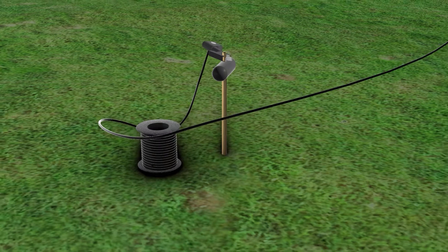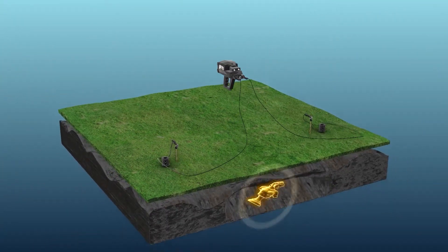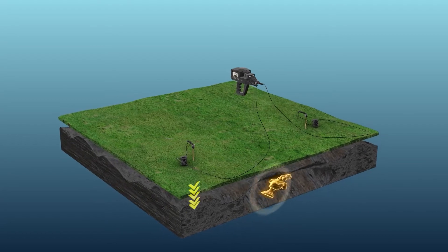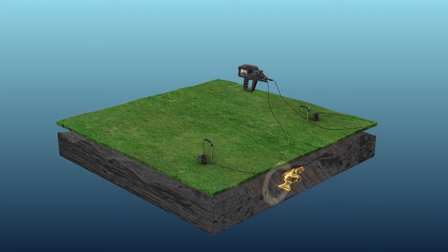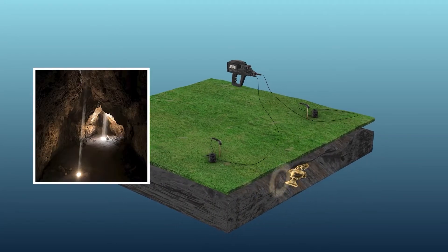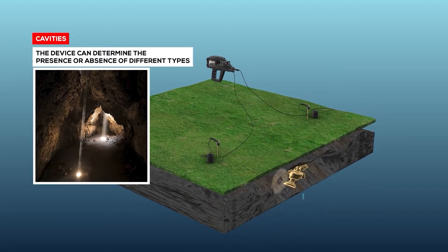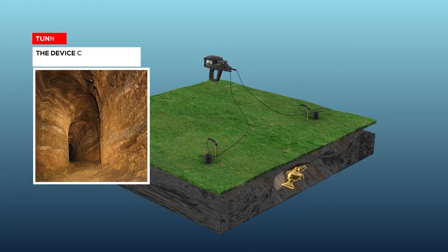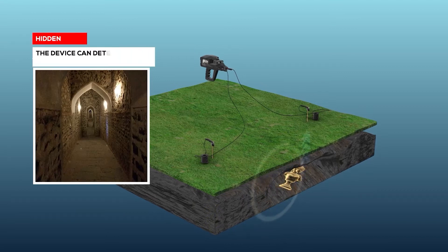Wedges are planted in the ground in the search area, and based on the soil's resistivity values, the device can detect the presence or absence of caves, cavities, tunnels, or hidden rooms.